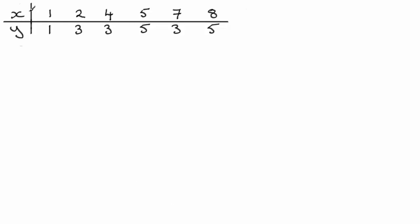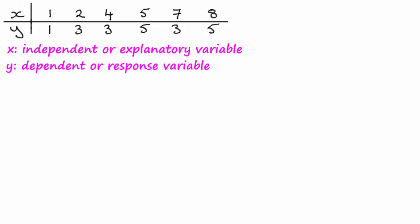Well let's suppose we've got a table of data. We've got the x data here and the y data here, and the x data is the independent or explanatory variable whilst the y data is dependent on that x data. So it's called the dependent or response variable.